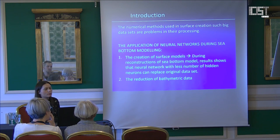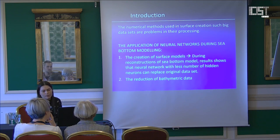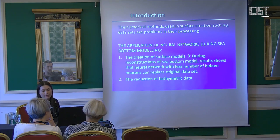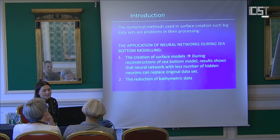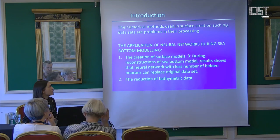It is obvious that this problem could be solved by data reduction, where some minimum number of points would be enough for surface reconstruction. But by application of neural networks, this problem could be solved in another way — by properly adjusting the structure to reduce the number of elements like number of layers or neurons. In that way, smaller sets of data representing the neural network structure could replace the bigger data sets of measurement points.